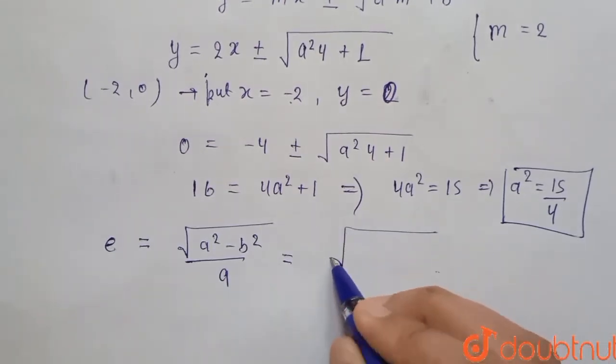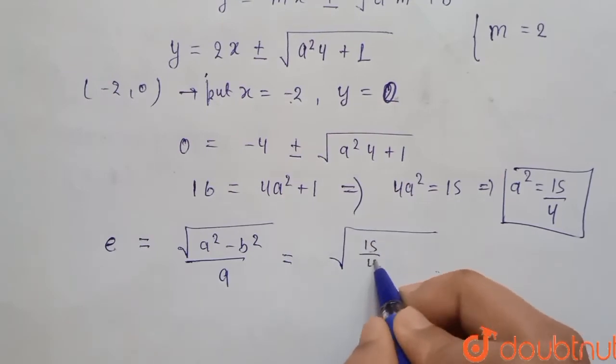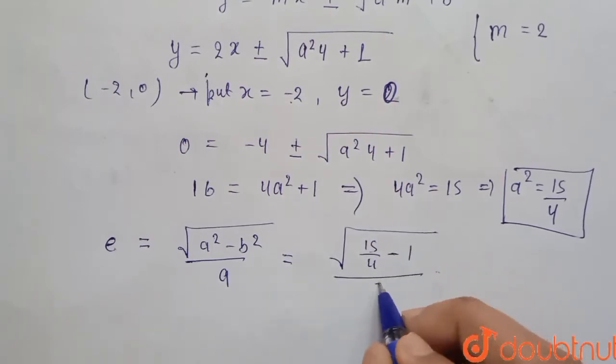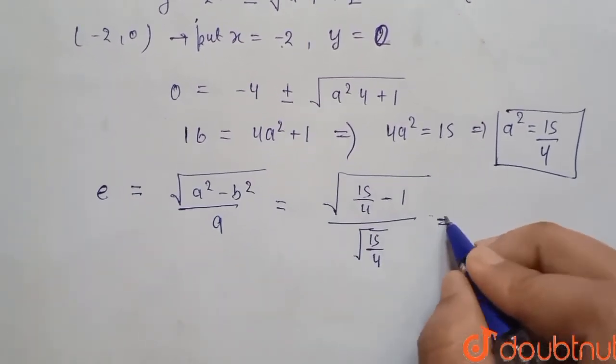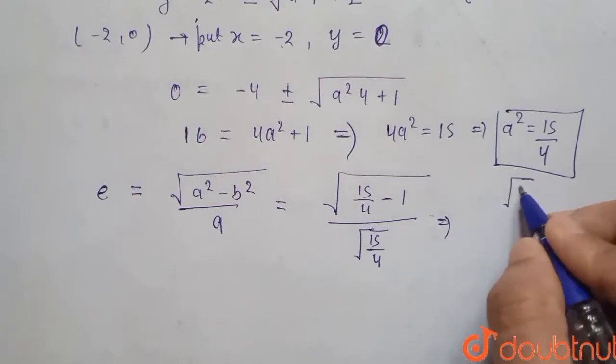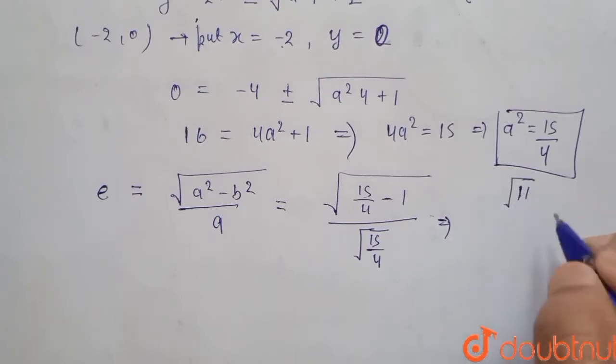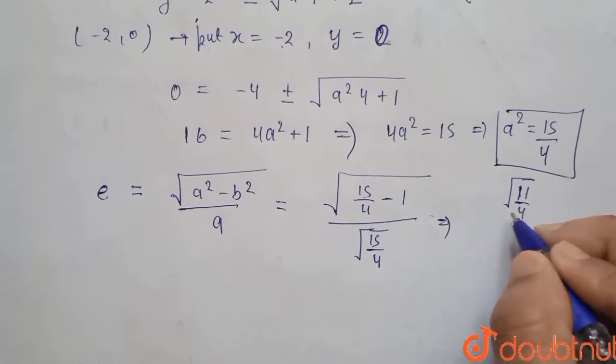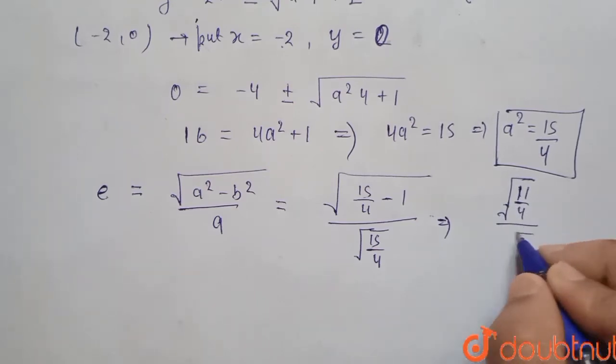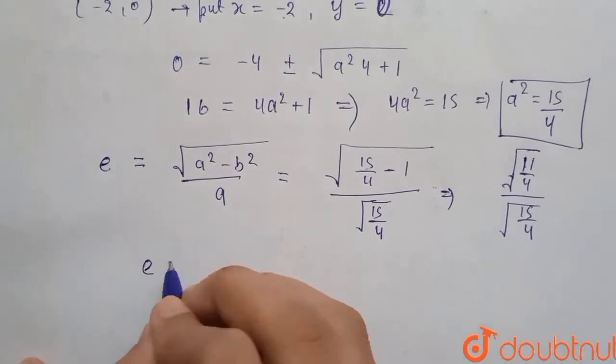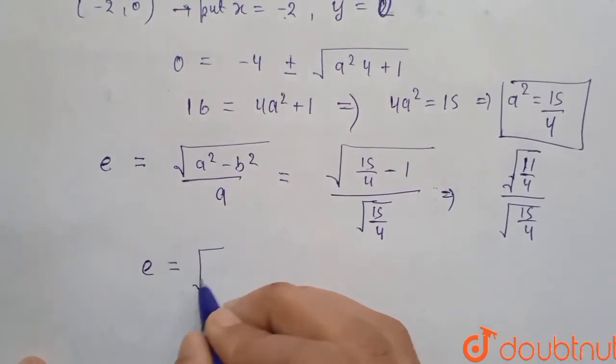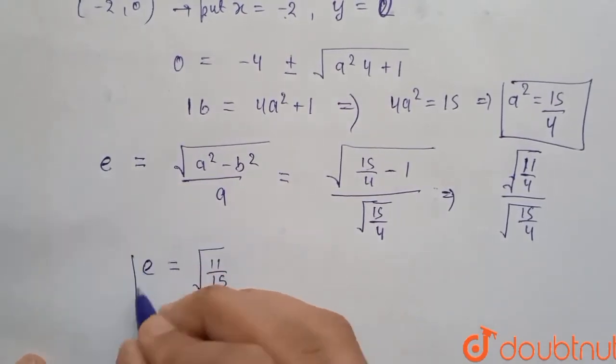Here we will get √(15/4 - 1) / √(15/4). Now this will become √(11/4) and we have here √(15/4). From this we get eccentricity equals to √(11/15).